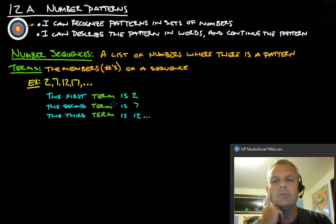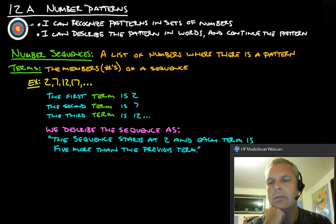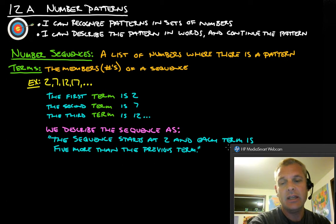The first term is 2, second term is 7, third term is 12, fourth term is 17, so forth and so on. We would describe the sequence as the sequence starts at 2 and each term is 5 more than the previous term.